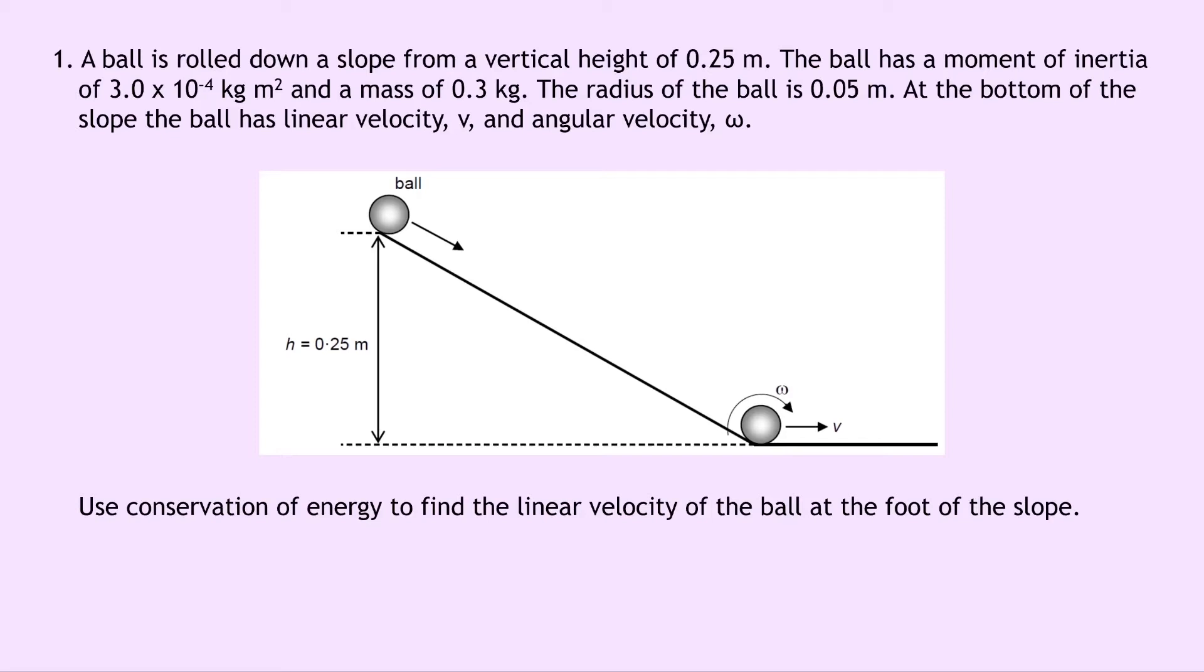At the bottom of the slope the ball has linear velocity v and angular velocity omega. Use conservation of energy to find the linear velocity of the ball at the foot of the slope.